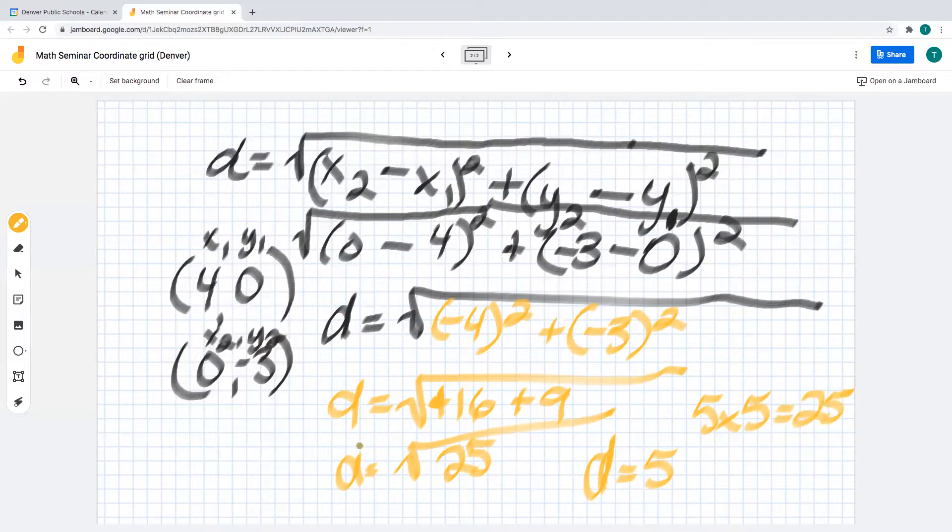Now, if this didn't give you a perfect square, you could have left it at radical 25. If you couldn't get 5, either one of these answers would have been right.